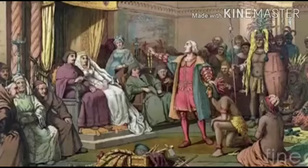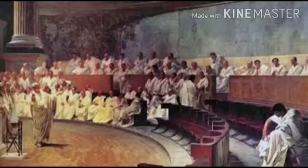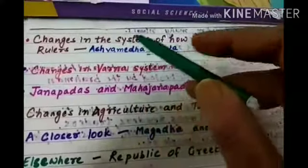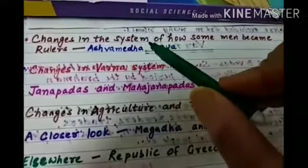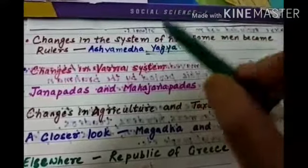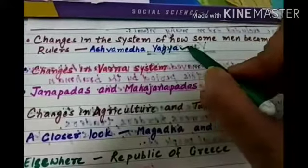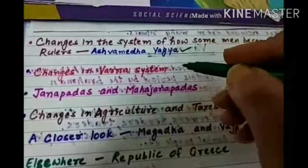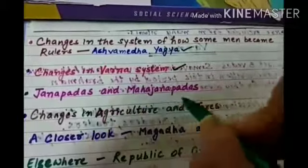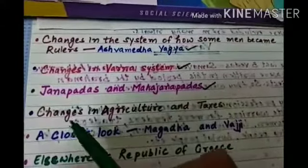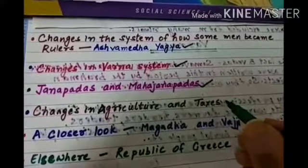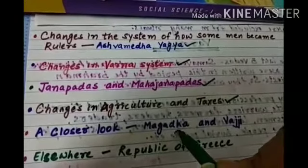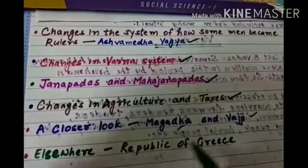तो इस chapter में हम ये सारी चीज़ें discuss करेंगे। जो पहली picture देख रहे हैं उसमें दिखाया जा रहा है राजा की राजशाही लोगों के ऊपर। Second picture जो देख रहे हो — आम लोगों में से ही राजा को चुना जा रहा है। इस chapter में हम discuss करेंगे अश्वमेधयाग के बारे में, वर्ण system के बारे में, agriculture और taxation system में क्या changes आए, और दो major powers Magadh और Vajji के बारे में, and we will also discuss the Republic of Greece.